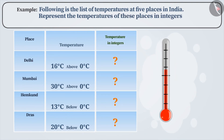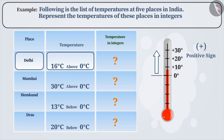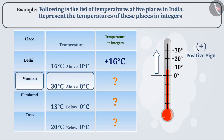If the temperature is above 0 degrees centigrade, then it is represented as a positive sign. So, the temperature of Delhi is 16 degrees above 0 degrees centigrade. Therefore, it is represented as plus 16 degrees. Similarly, Mumbai is 30 degrees centigrade above 0 degrees. Therefore, it is represented as plus 30 degrees centigrade.